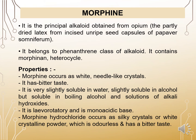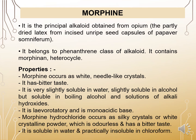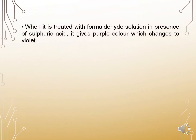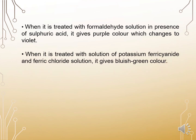Morphine hydrochloride occurs as silky crystals or white crystalline powder, odorless with a bitter taste. It is soluble in water and practically insoluble in chloroform. Chemical identification tests: when treated with formaldehyde solution in the presence of sulfuric acid, it gives a purple color that changes to violet. When treated with sodium solutions of potassium ferrocyanide and ferric chloride, it gives a bluish-green color. These are used as identification tests for morphine.